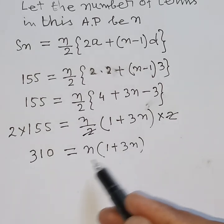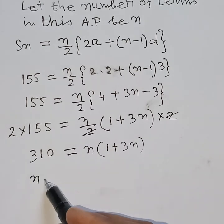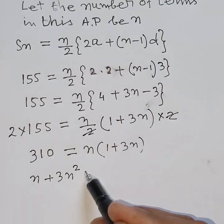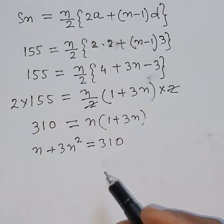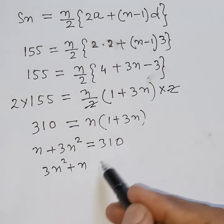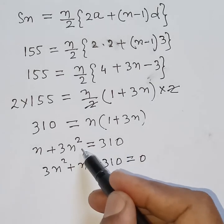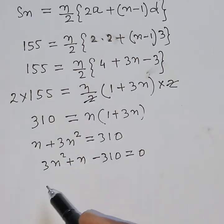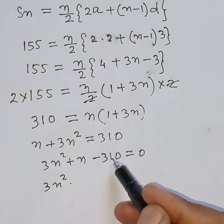Expanding the left side: n plus 3n squared is equal to 310. Transferring to one side gives 3n squared plus n minus 310 is equal to 0.